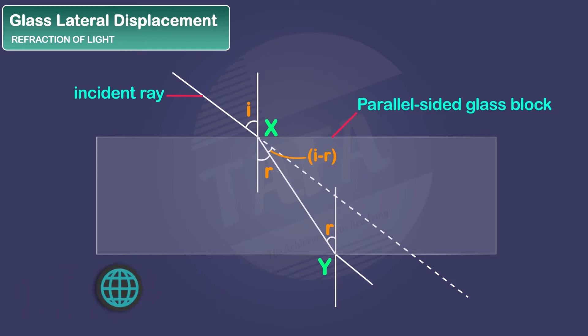Because it's coming from an optically denser medium to an optically less dense medium, it deviates away from the normal. That's why we're getting the angle of emergence E, as you can see in the diagram.